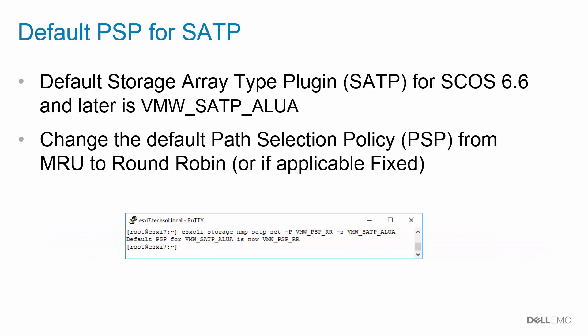The next important thing to set is the path selection policy for the storage array type plugin. When a volume is presented to a vSphere host, that host detects it and assigns it the ALUA SATP module. By default, the path selection policy for the SATP ALUA module is most recently used, or MRU. Best practice is to set the ALUA SATP module to round robin, which allows for equal distribution of load across all ports in the host.